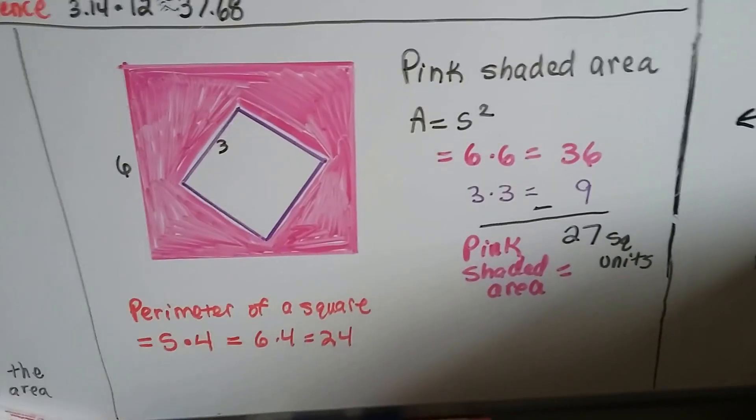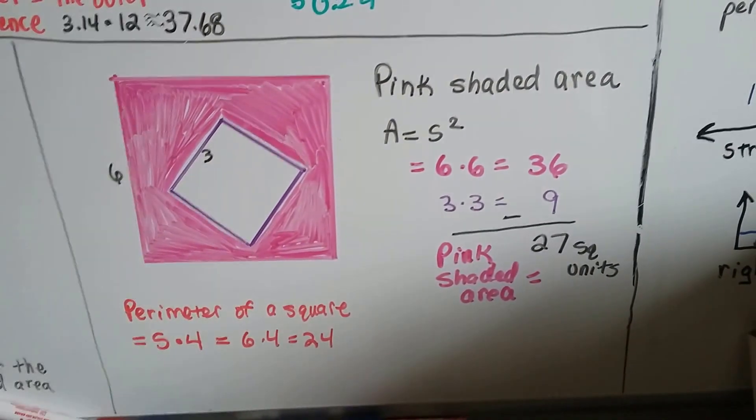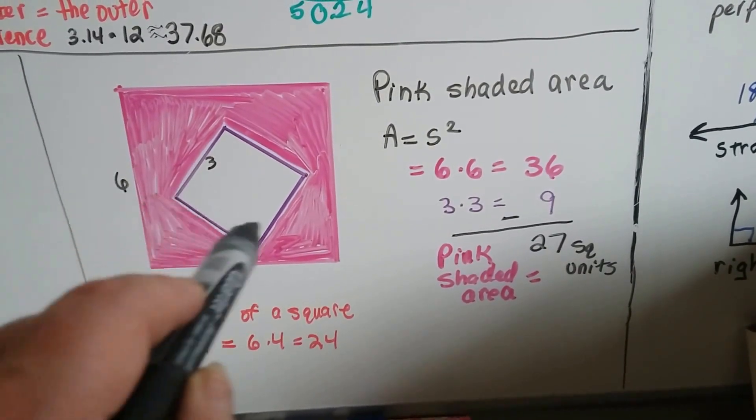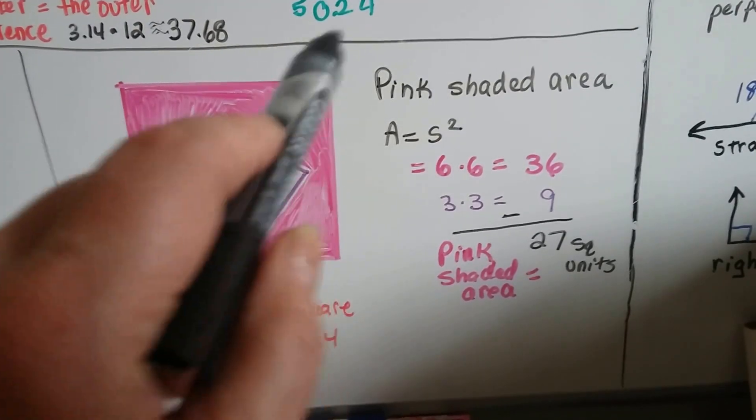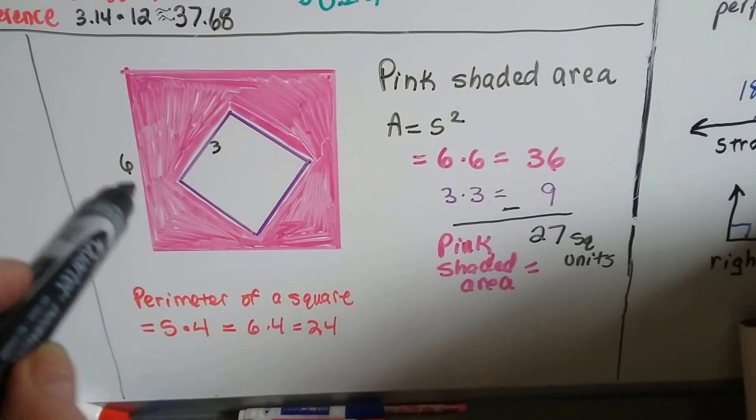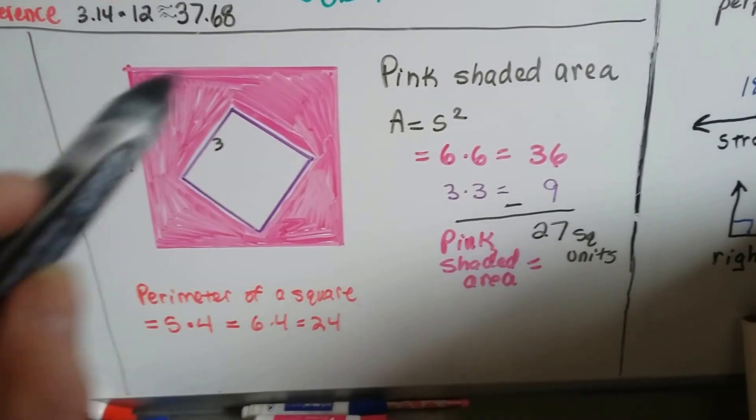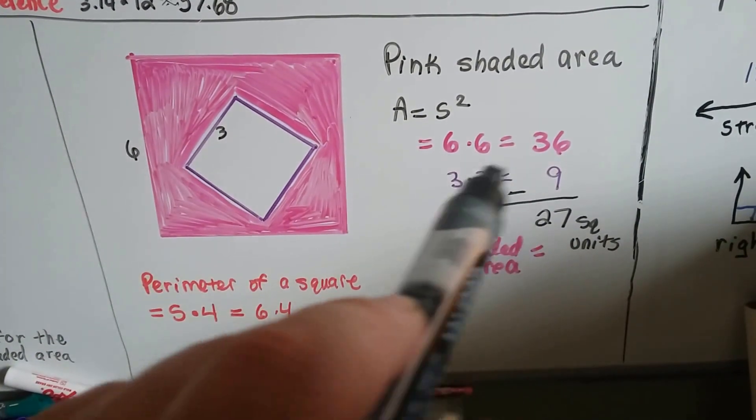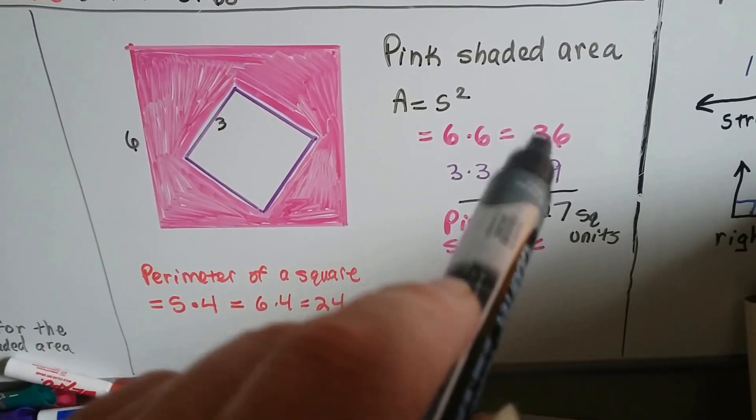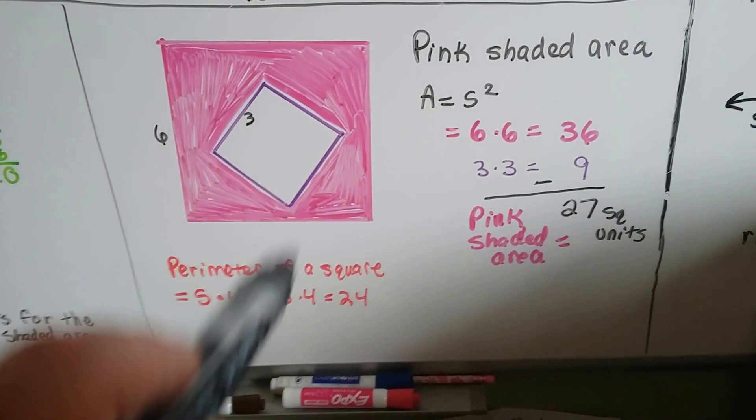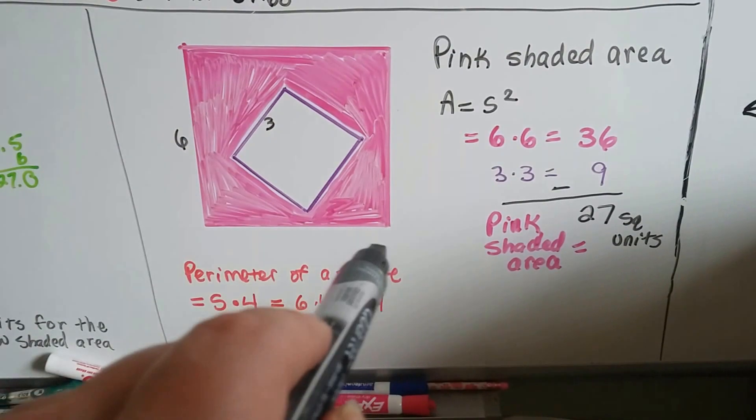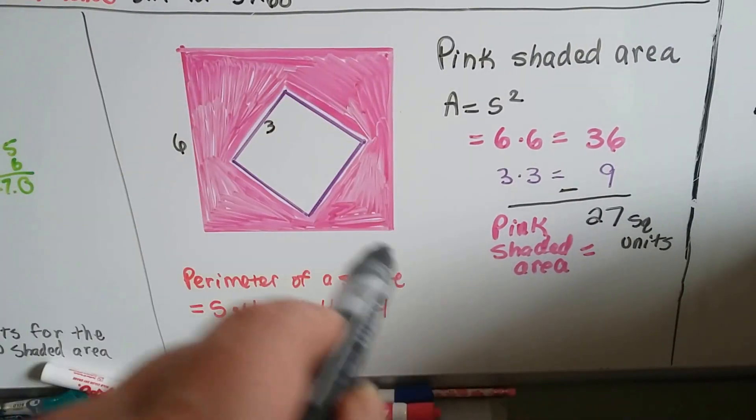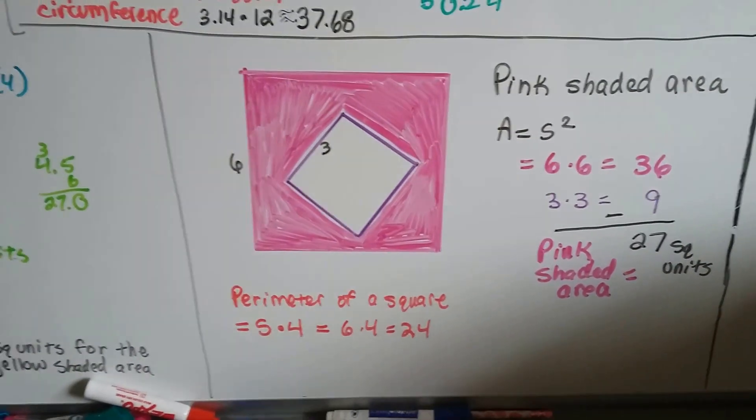What if you've got a square like this with another twisted kind of turned square inside of it? Well, it doesn't matter what direction it's leaning. If we know one side is 3, we know all the sides are 3. And, if this one side is 6, we know all the sides are 6. So, the area for a square is the side times the side, so 6 times 6 would be 36. And, for the inside purple and white one, it would be 3 times 3, which is 9. We subtract the 9 from the 36, and we get 27 square units for the pink shaded area. And, then the perimeter is 4 times 6, the 6 side areas, and there's 4 of them. So, that would be 24.